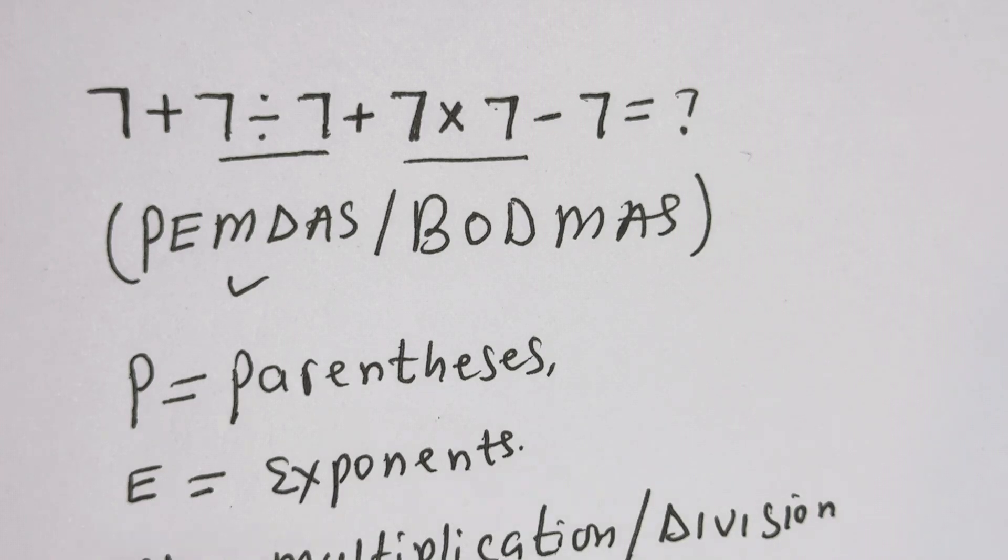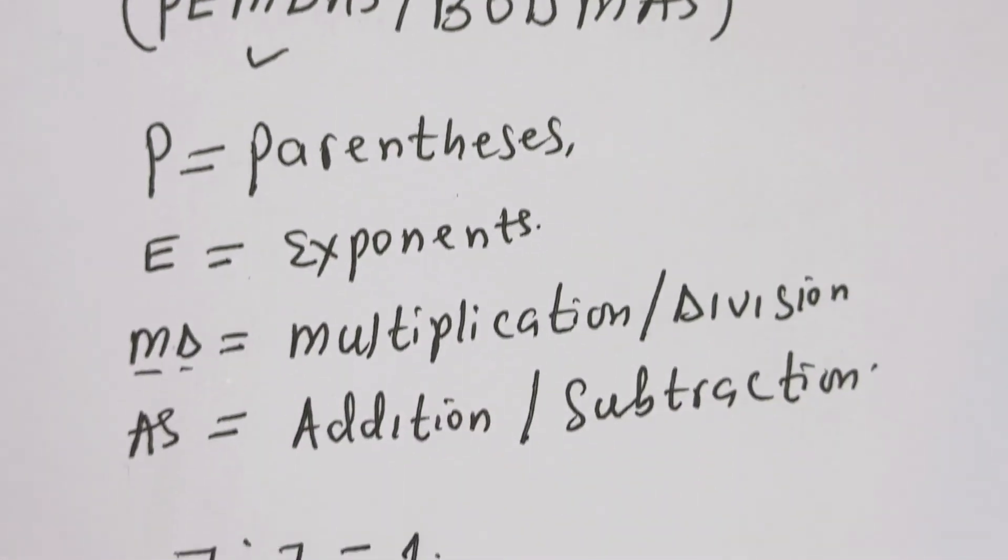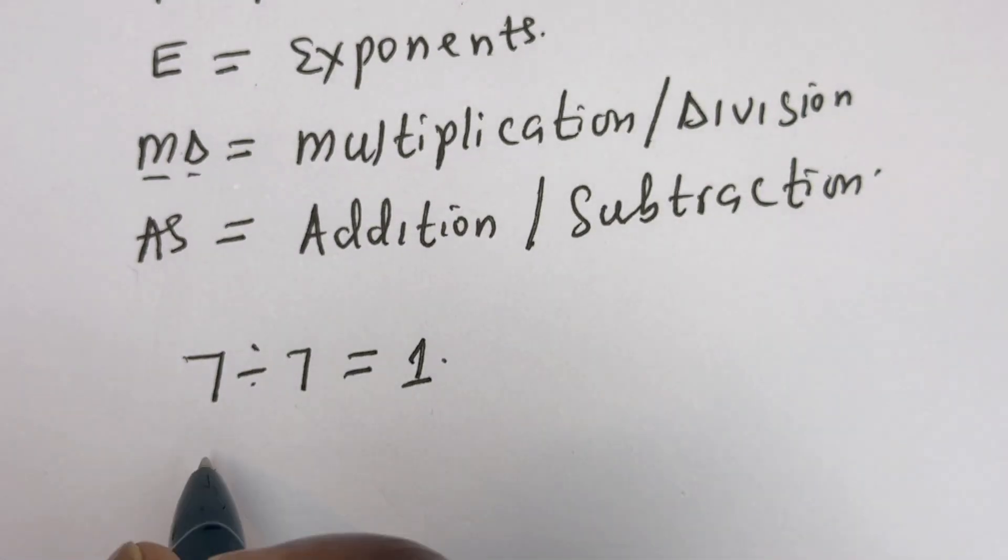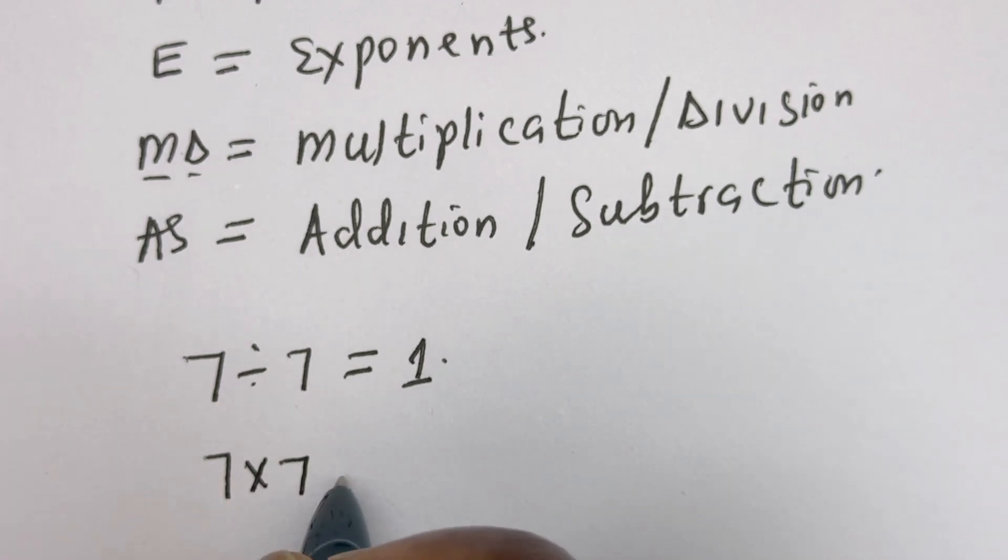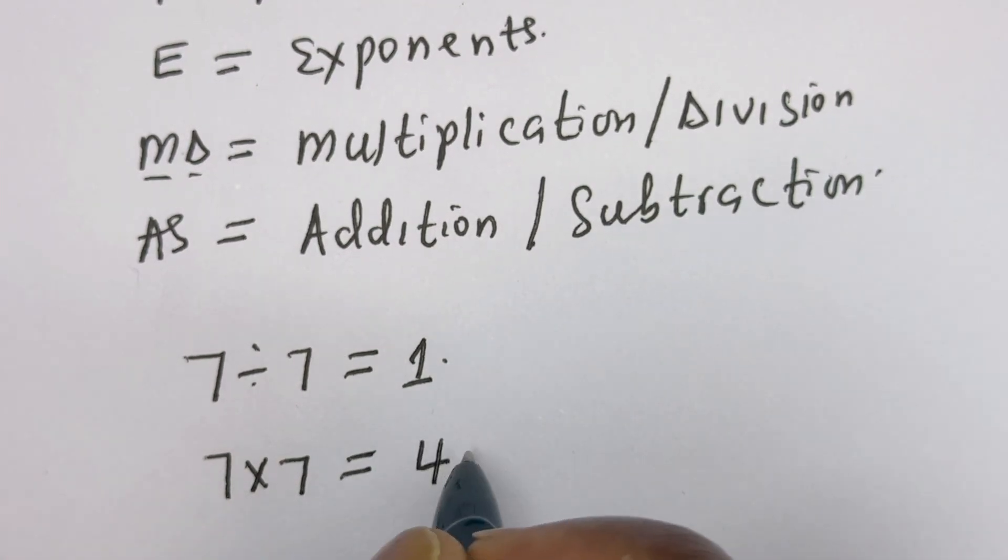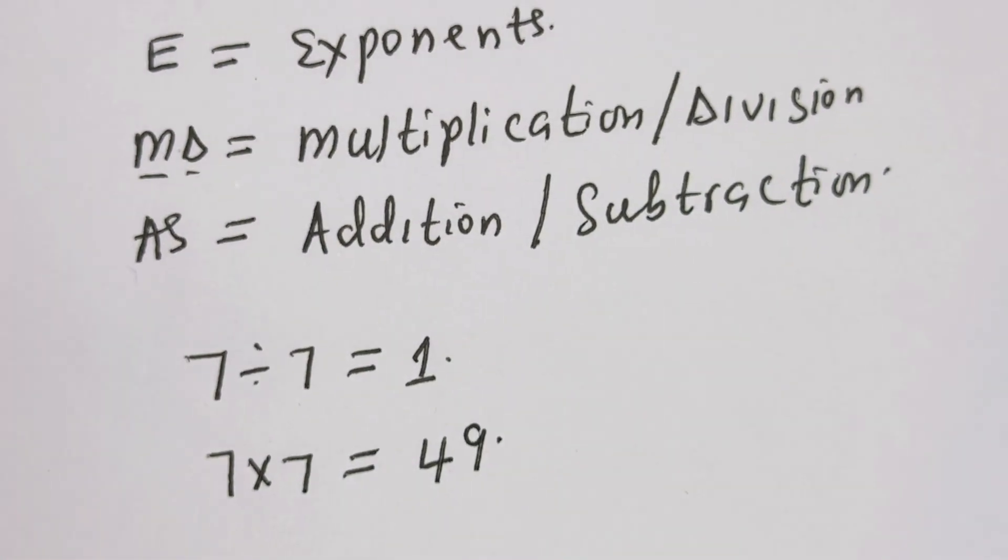Then for the multiplication side, 7 × 7, this equals 49. We can now substitute.